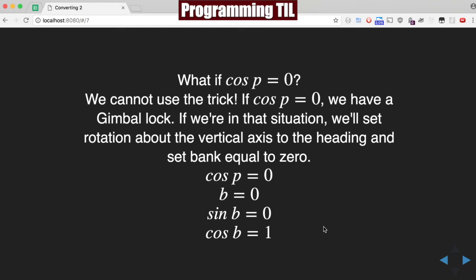But what if cosine P equals zero? We can't use the same trick. If cosine P equals zero, we have a gimbal lock. If we're in that situation, we'll set rotation about the vertical axis to the heading and set bank equal to zero.